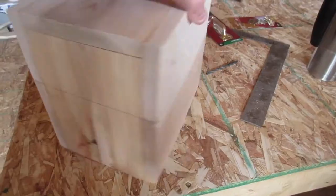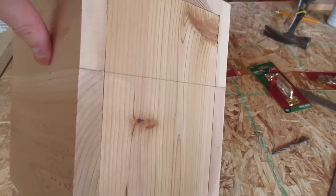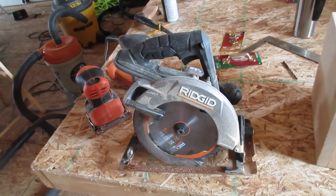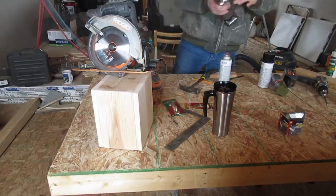Today we're going to cut the lid off of it. So we don't have a table saw, which most people use to cut boxes open. We're going to use our circular saw, a Rigid cordless circular saw. This is my first time ever doing this, so wish me luck.